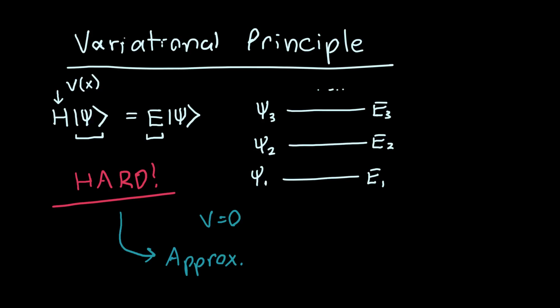But in general, you can't. And so we resort to approximation methods. Perturbation theory is one approximation method, probably the most important one. And coming in at number two is the variational principle. And so what the variational principle allows us to do is it allows us to find this energy E1.